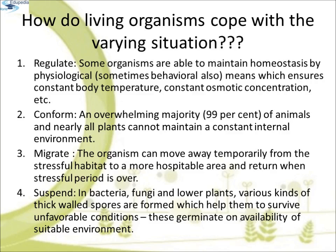The second strategy is to conform. An overwhelming majority — about 99% of animals and nearly all plants — cannot maintain a constant internal environment. Their body temperature changes with ambient temperature, and in aquatic animals the osmotic concentration of body fluid changes with that of ambient water. These animals and plants are called conformers.